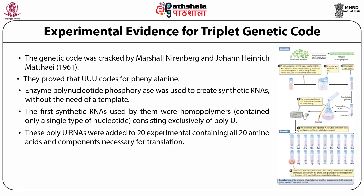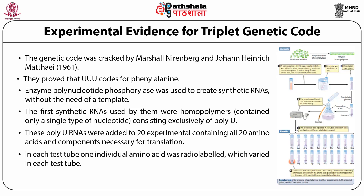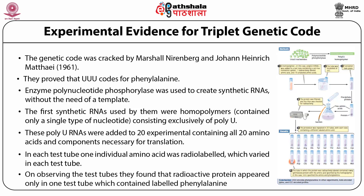They obtained an RNA molecule consisting entirely of uracil nucleotides, which had only UUU codons. These poly-U RNAs were added to 20 experimental sets containing all 20 amino acids and components necessary for translation. In each test tube, one individual amino acid was radiolabeled. On observing the test tubes, radioactive protein appeared only in the test tube containing labeled phenylalanine. Thus it was proved that UUU codes for phenylalanine. Later, codons were determined for lysine, glycine and proline.